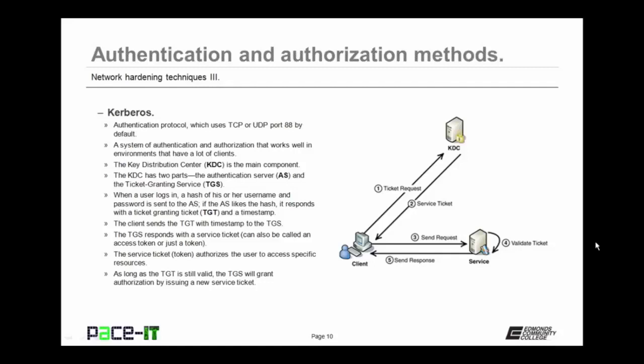The client then sends the TGT with the timestamp to the ticket granting service, the TGS. The TGS then responds with a service ticket — which can also be called an access token — that authorizes the user to access specific resources on that network. As long as the TGT is still valid, the TGS will grant additional authorization by issuing a new service ticket as required for as long as the TGT and its timestamp are still valid.